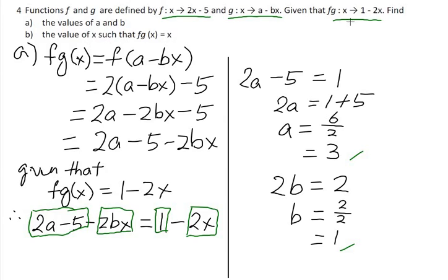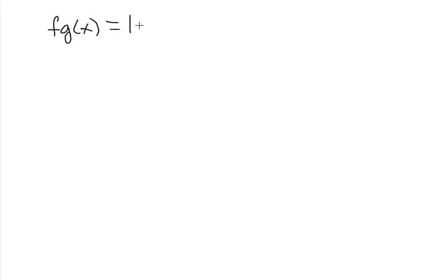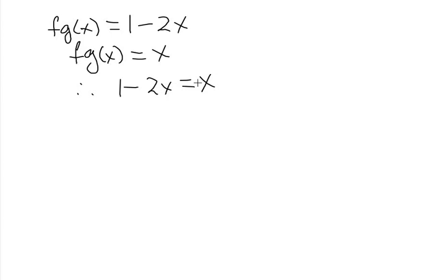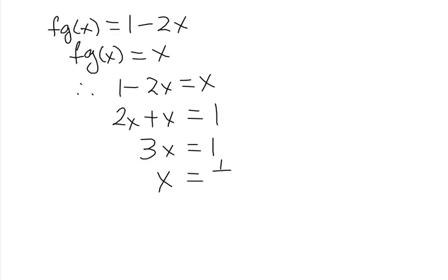We know that fg(x) equals 1 minus 2x, so 1 minus 2x equals x. Moving the x terms together: 2x plus x equals 1, so 3x equals 1, therefore x equals 1 over 3.